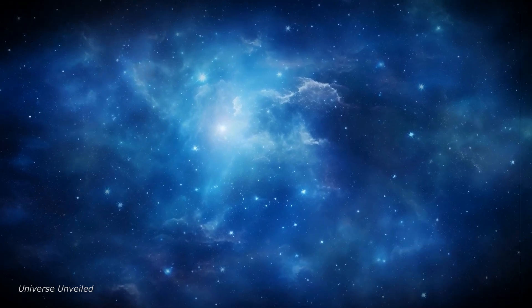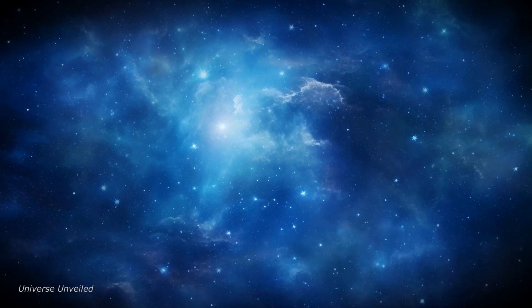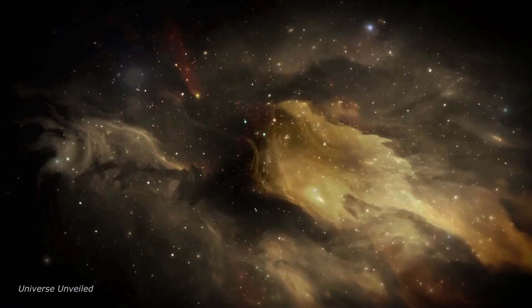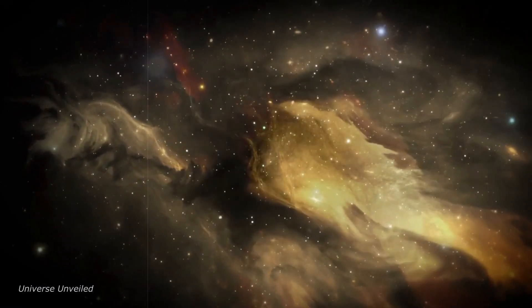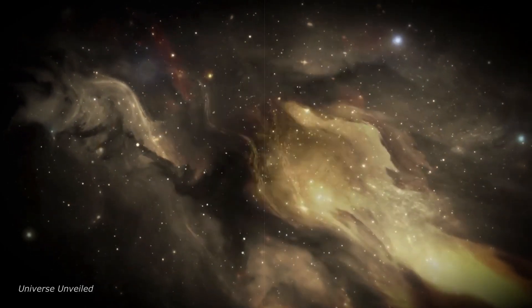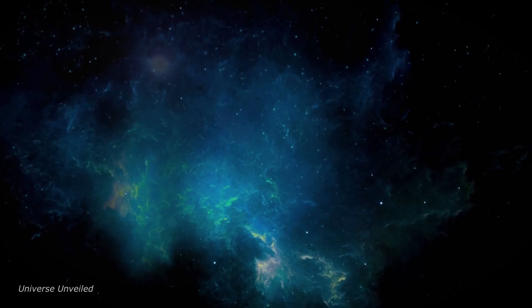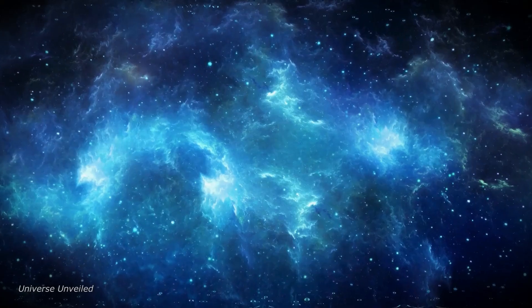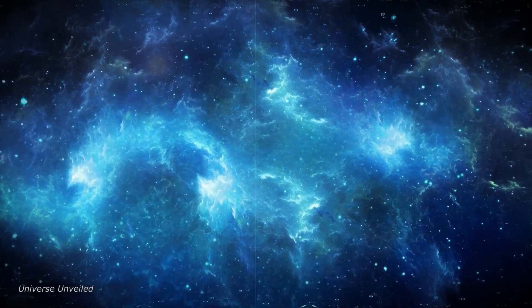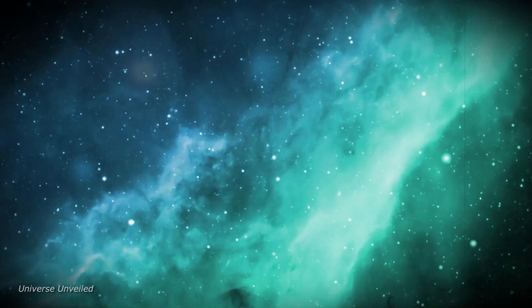Andromeda's structure is a classic spiral, much like our own galaxy, with elegant arms winding outward from a bright central core. These arms are cradles of cosmic creation, dotted with nebulae where new stars are born from dust and gas, pulled together by gravity. It's a dynamic, living entity, constantly changing and evolving.